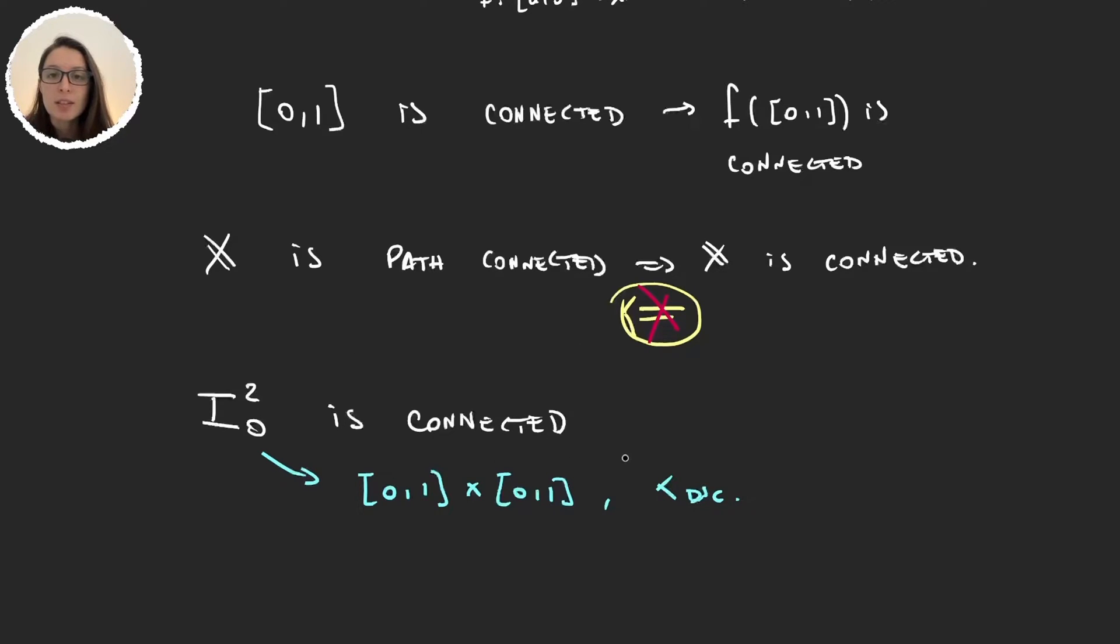This set is connected and we will prove that it is not path connected. So that will show us that not every connected set is path connected.